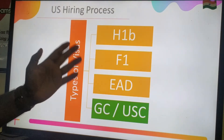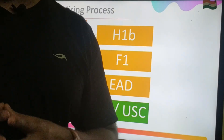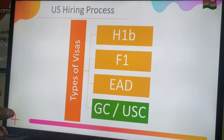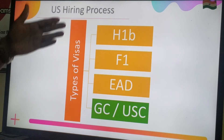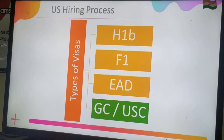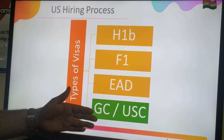Let's understand the US hiring process. Generally, US organizations and IT services companies hire only people who are eligible to work full-time in the United States. Valid statuses include dependent visa professionals and independent visa professionals. H-1B is a dependent visa; F-1 is a student visa providing a two-year period for master's studies, after which a student receives OPT (Optional Practical Training). Then there is EAD, the Employment Authorization Document, and finally Green Card and citizenship.